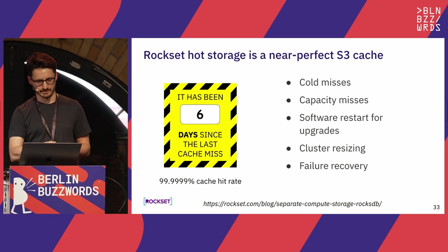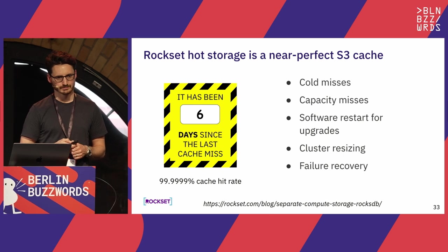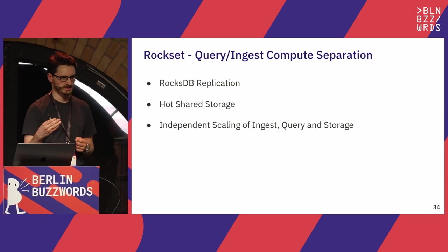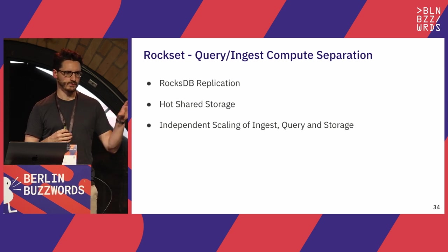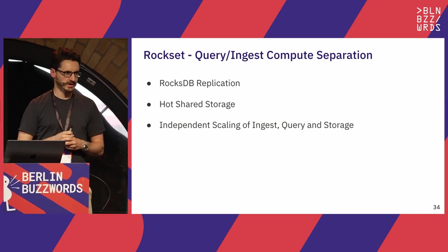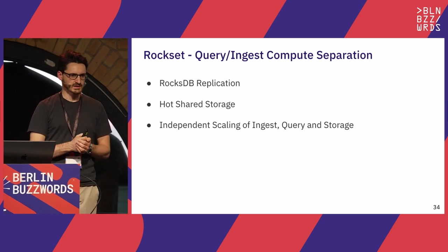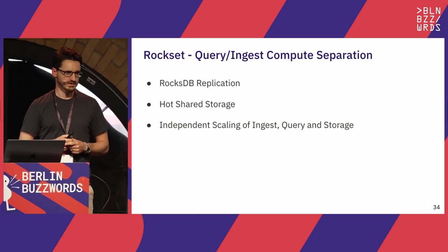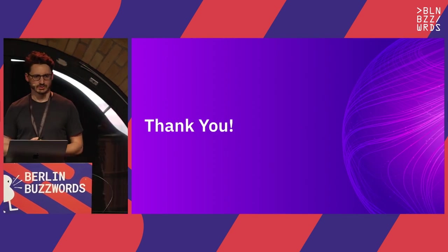In summary, query-compute separation is underpinned by two technologies: RocksDB replication, where the ingest worker does the logical-to-physical transformation and the query worker just applies physical updates; and shared hot storage, which reduces storage costs. All of this gives us independent scaling of ingest, query, and storage based on each component's needs — what we call cloud-native.